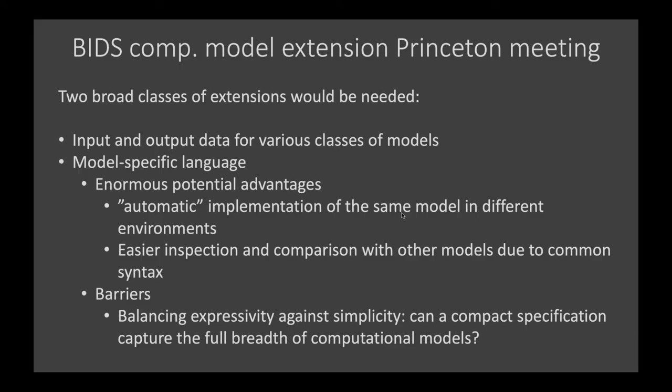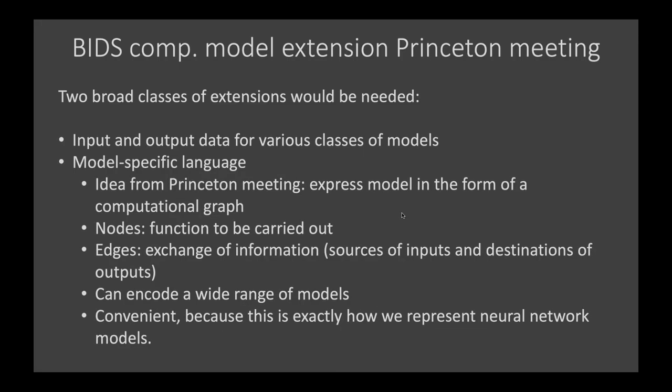Can a compact specification capture the full breadth of computational models? The idea from the Princeton meeting is to express models as a computational graph where each node is a function to be carried out, and the edges describe input-output relationships between those functions — the edge specifies the argument and the result of each function. With such a graph we can encode a very wide range of computational workflows.